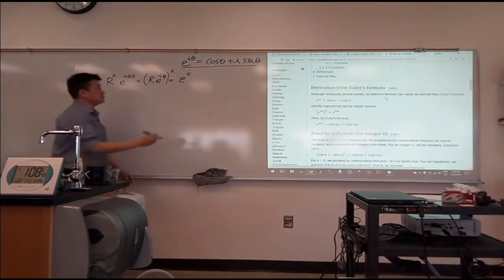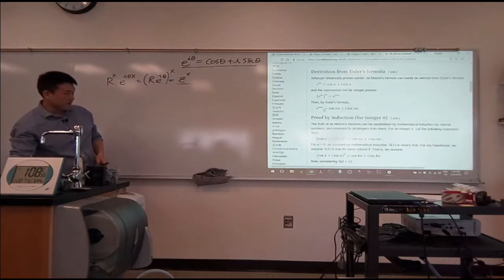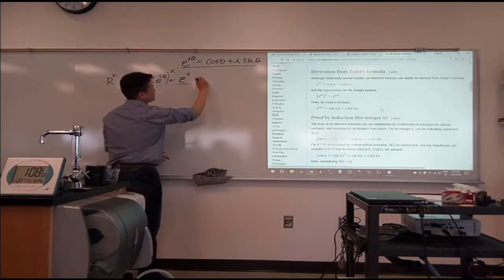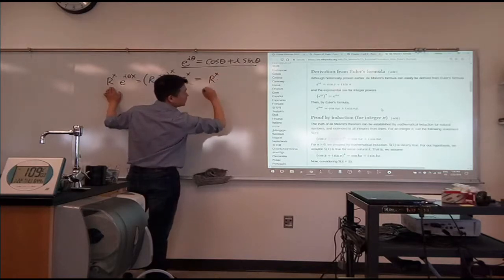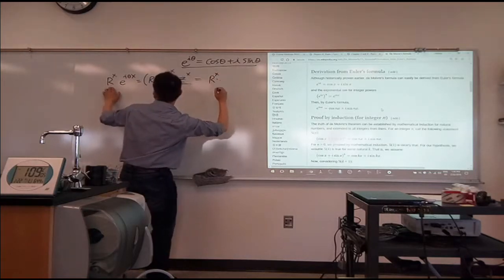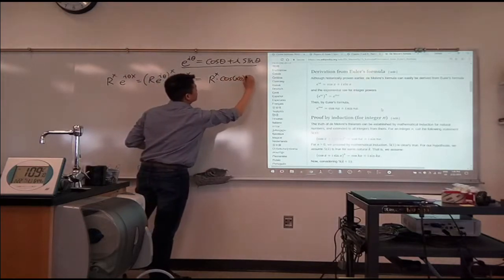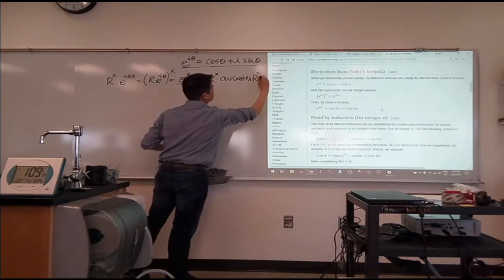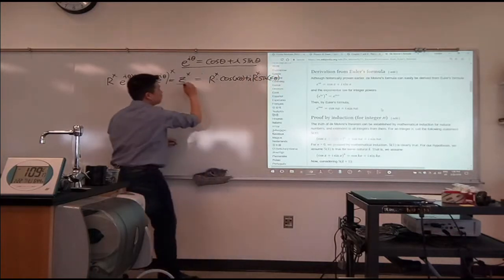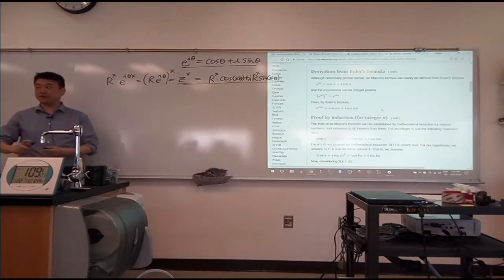The exponential power rule says that when you have this, the x simply multiplies to the existing power here. This becomes r raised to power of x and E to the i theta x. That's where you get the De Moivre formula: r to the power of x times cosine of x theta plus i times r to the power of x sine of x theta. That was the De Moivre formula that hopefully got mentioned in your trigonometric class.